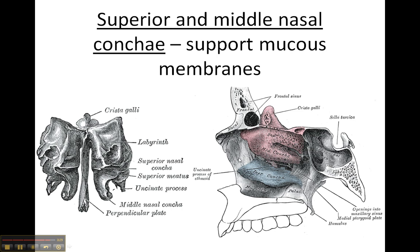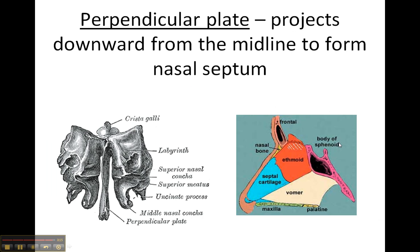The nose is right here, and the cartilaginous part of the nose would be right here. You can see this great image — here's the crista galli sticking up, here's the crista galli and sella turcica. And then finally, you have the perpendicular plate that projects downward from the middle, and that forms the nasal septum.